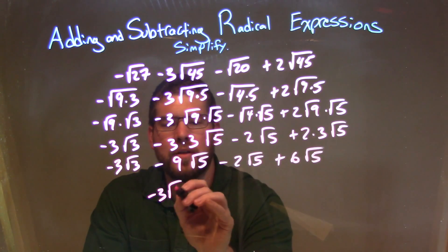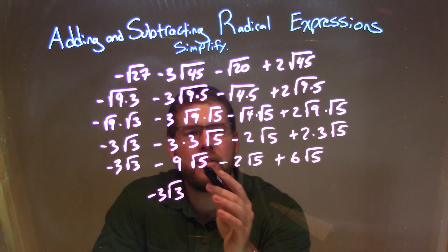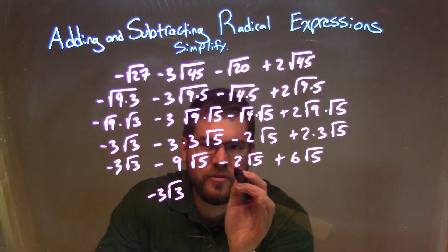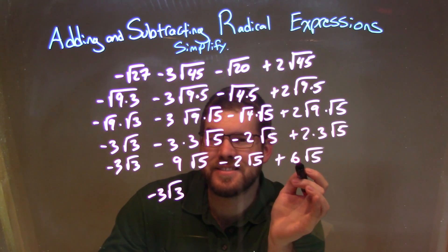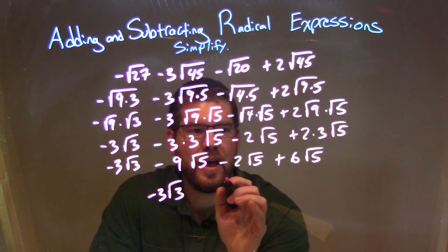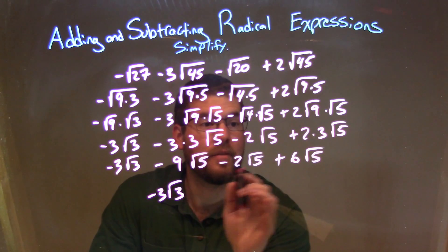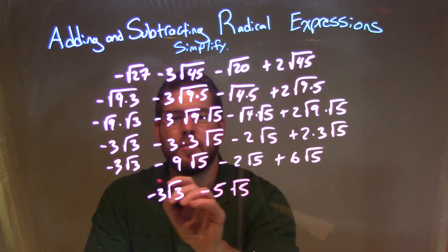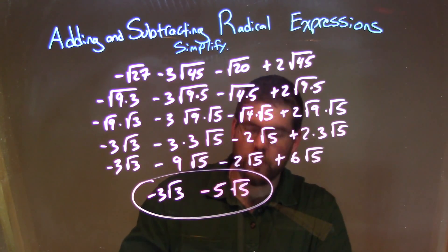The minus 3 square root of 3 is all by itself because there's nothing else to combine it with. But for the square root of 5 terms, I look at the numbers out in front of them. Minus 9 minus 2 is minus 11, but plus 6 comes out to be minus 5. So we have minus 5 square root of 5, and we combine all of them together. That's my final answer: negative 3 square root of 3 minus 5 square root of 5.